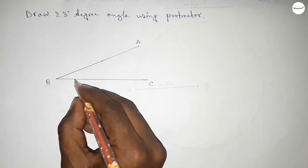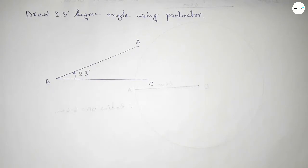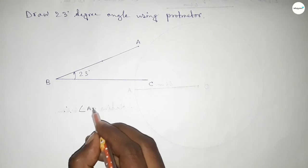So angle AVC, up to this, this is 23-degree angle. Therefore, angle AVC up to this.